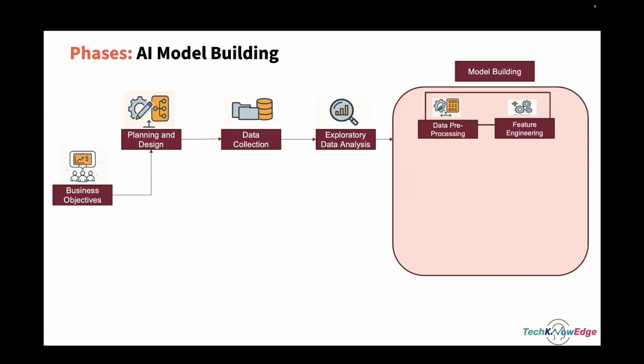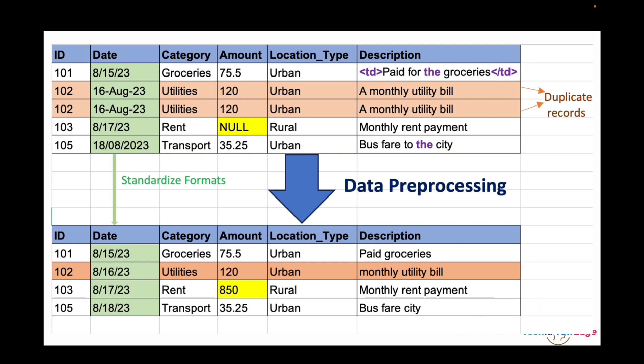Now let's move to the data preparation phase. First, data preprocessing — this is the cleanup phase, making your data ready for the model. Remove duplicates, as they can skew results. Handle null values — drop or impute them. Standardize formats, like making date formats consistent. For example, if you don't have brand data for rural areas, you could run a quick survey, estimate an average and plug it in. If your data was crawled from a website, you might get HTML tags like table or div — those need to be stripped out. And words like 'a', 'the', 'and' are just noise for most AI tasks — remove them.